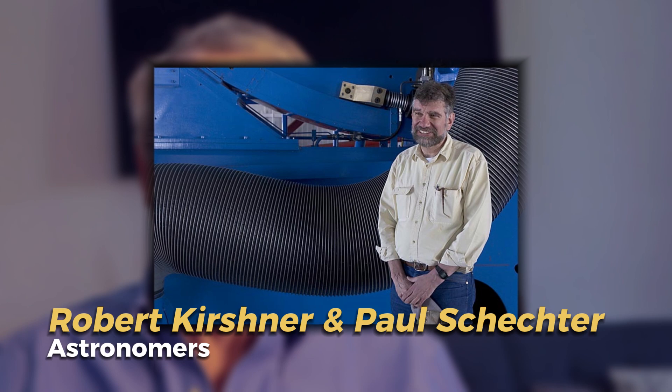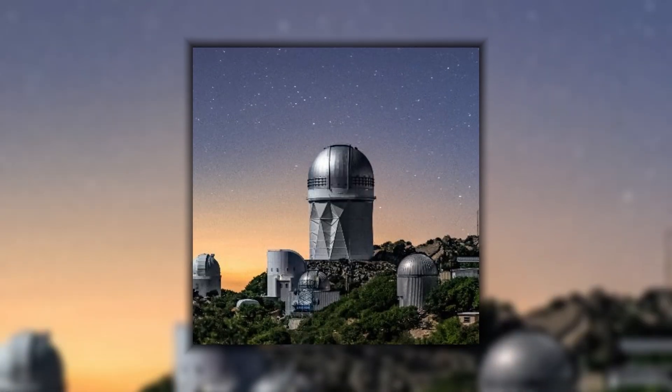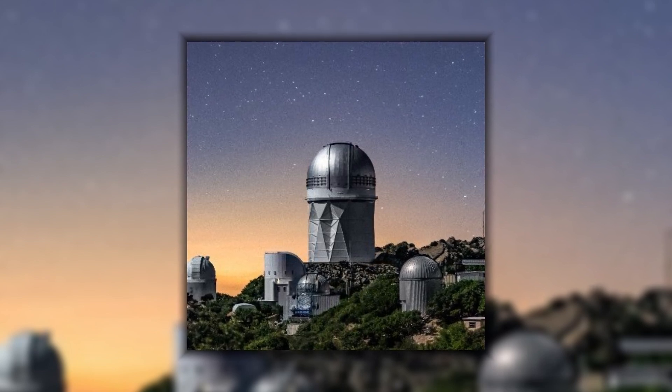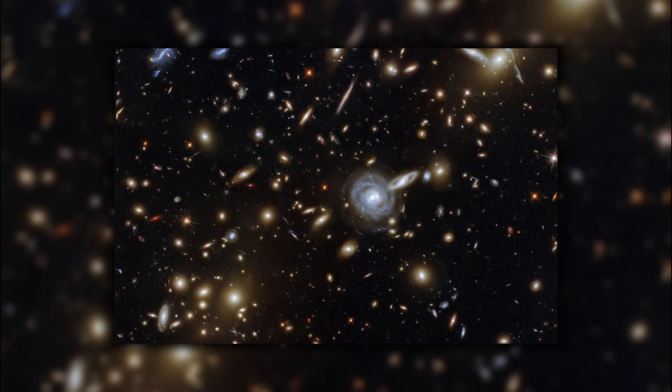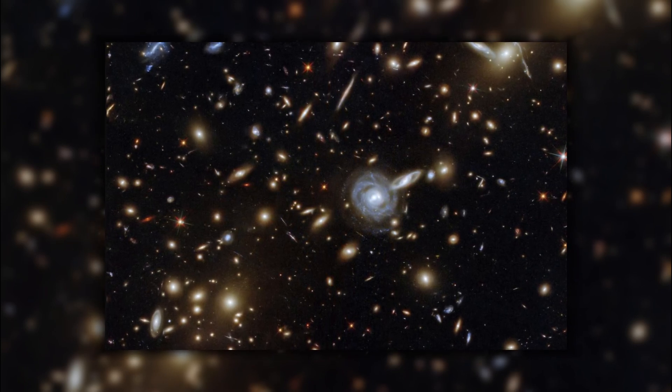Astronomers Robert Kirschner and Paul Schechter first discovered the Boötes Void in 1981 while they were using the Kitt Peak National Observatory in Arizona to study the distribution of galaxies in the universe. They found that there was a large region of space in the constellation Boötes that had very few galaxies.